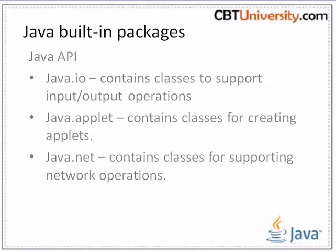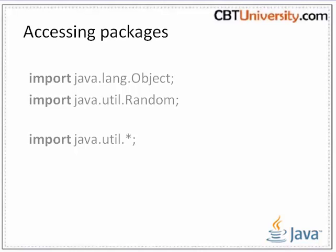Each package consists of a large number of related classes. We are familiar with the java.io package, which contains classes to support input and output operations in Java. Examples of built-in packages are: java.io, which contains classes to support input and output operations; java.applet, which contains classes for creating applets; java.net, which contains classes for supporting network operations.